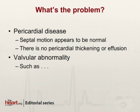If this were pericardial disease, the septal motion should look abnormal. There should be variance of the septal motion depending on the respiratory cycle — what's referred to as the septal bounce with pericardial constriction. This patient has no such finding. There doesn't appear to be anything structurally wrong with the pericardium, and on the images there's no pericardial effusion.